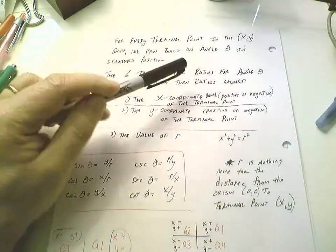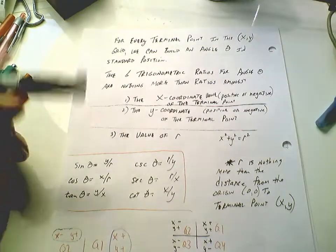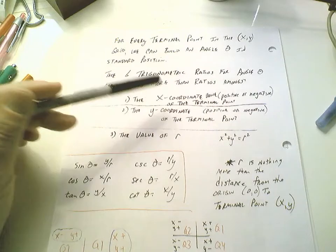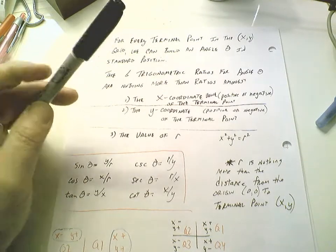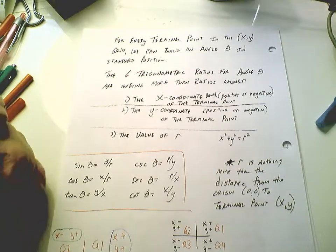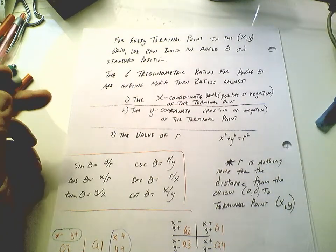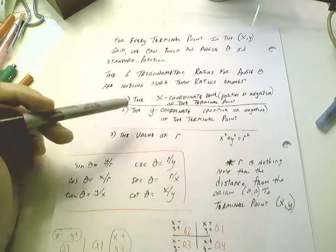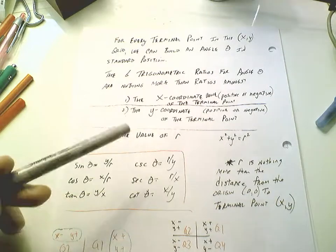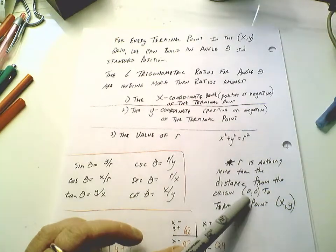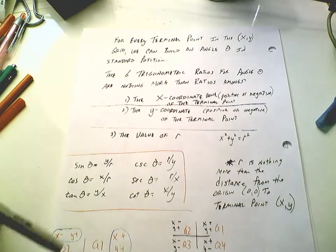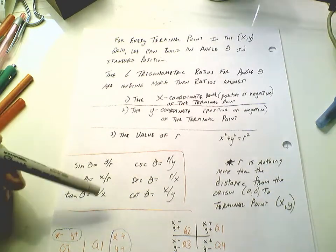And the six trig ratios for whatever angle I build are nothing more than those ratios amongst the following. The x coordinate value of the terminal point whether that's positive or negative. The y coordinate whether that's positive or negative of the terminal point. The location of the terminal point, whether the x or y coordinates happen to be positive or negative, are going to impact the underlying and eventual trigonometric values for that angle. The last piece is just the value of r, which is nothing more than distance from the origin (0,0) to the terminal point (x,y). All our trig ratios are between our y coordinate, our x coordinate, the r value - all those different combinations.